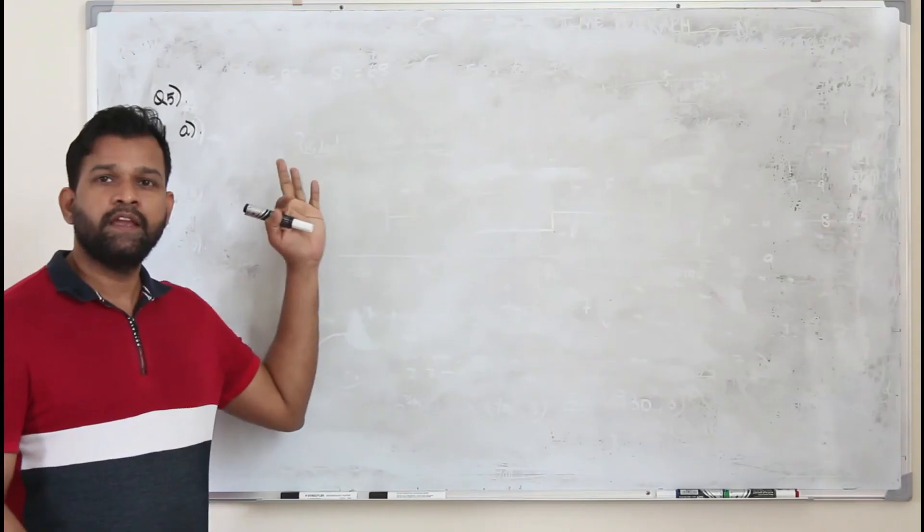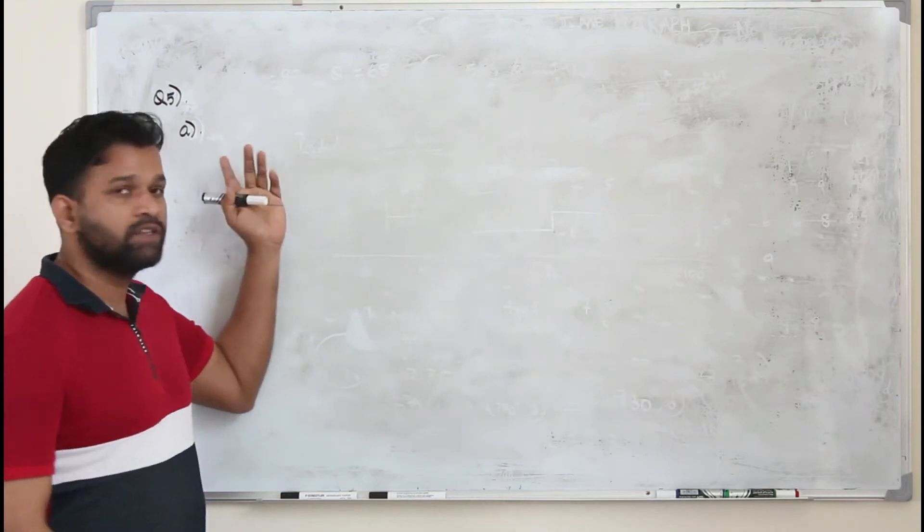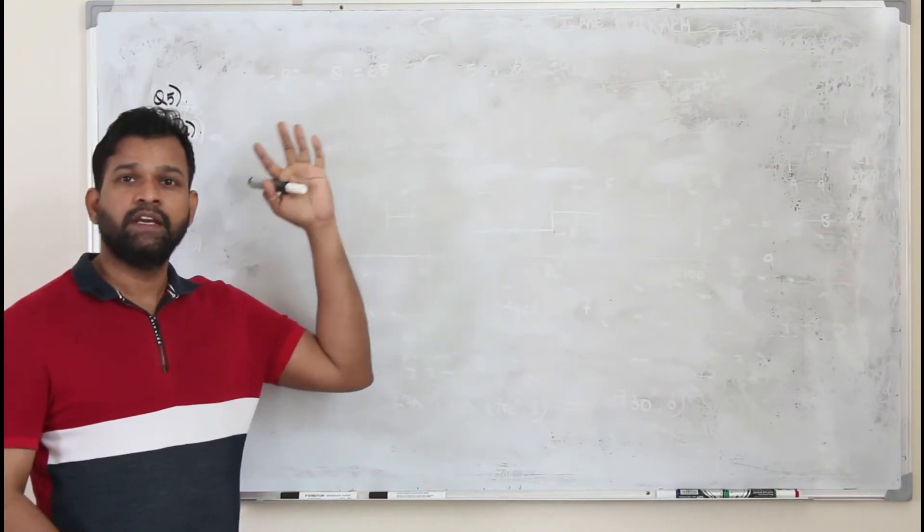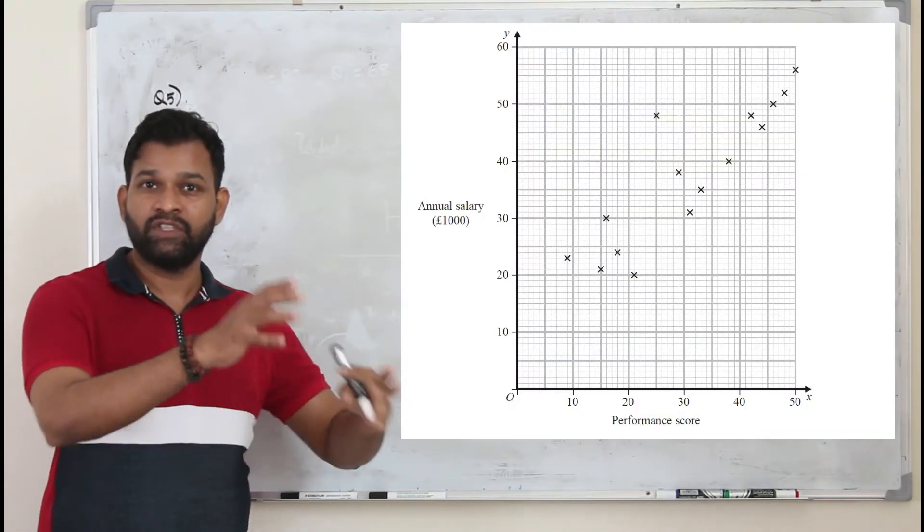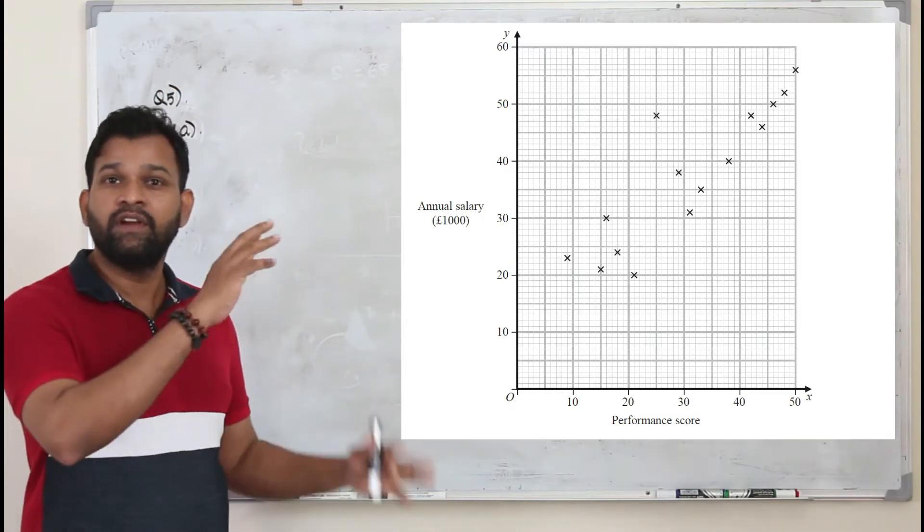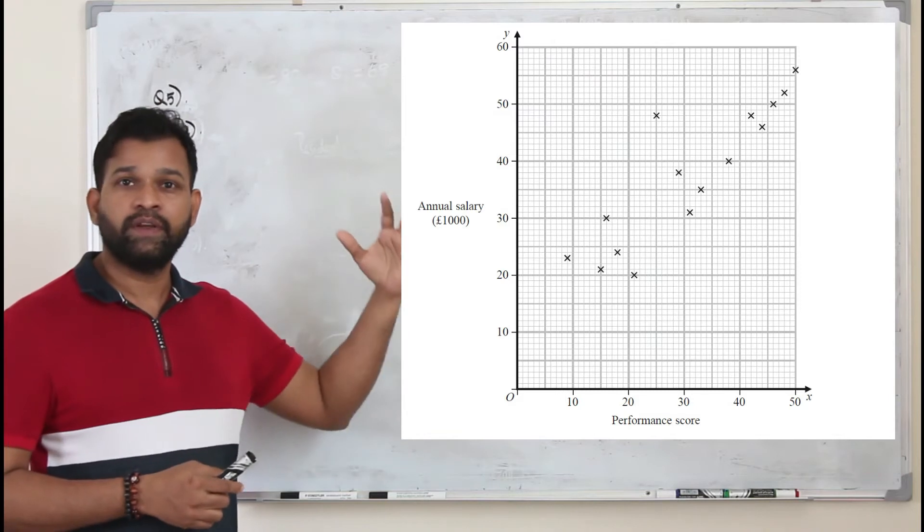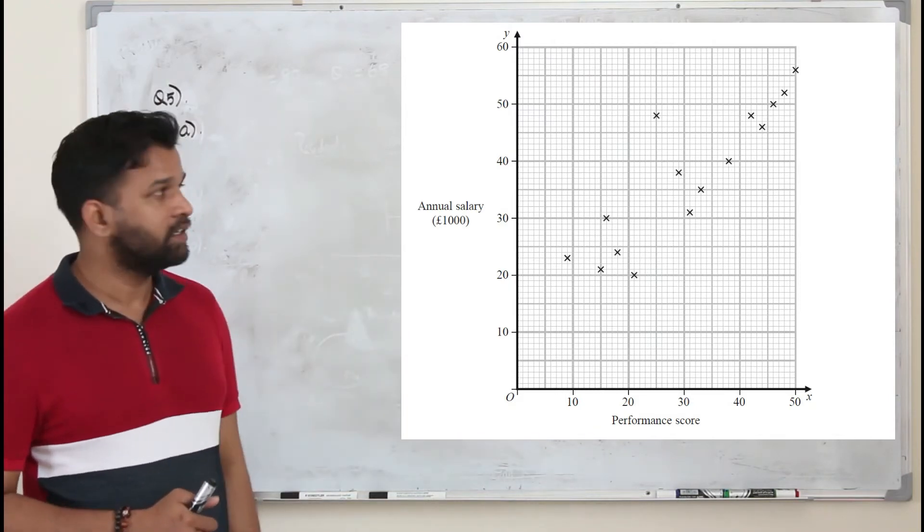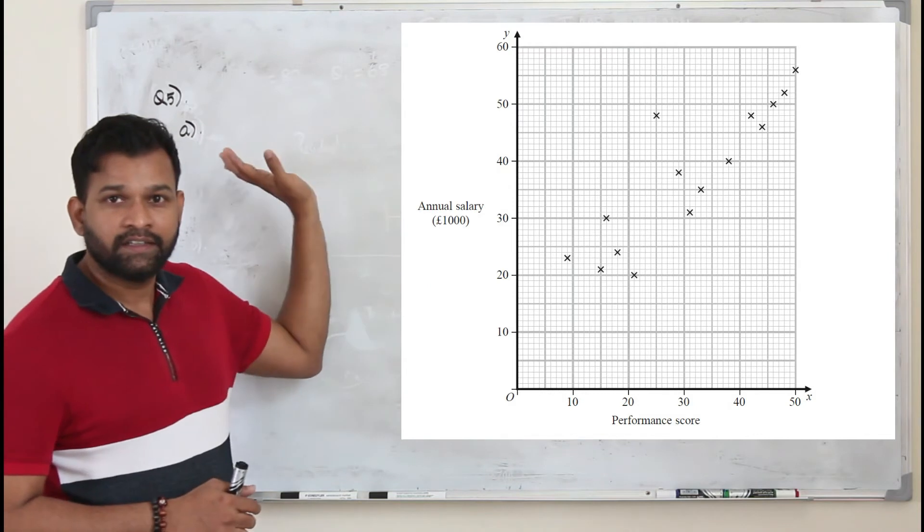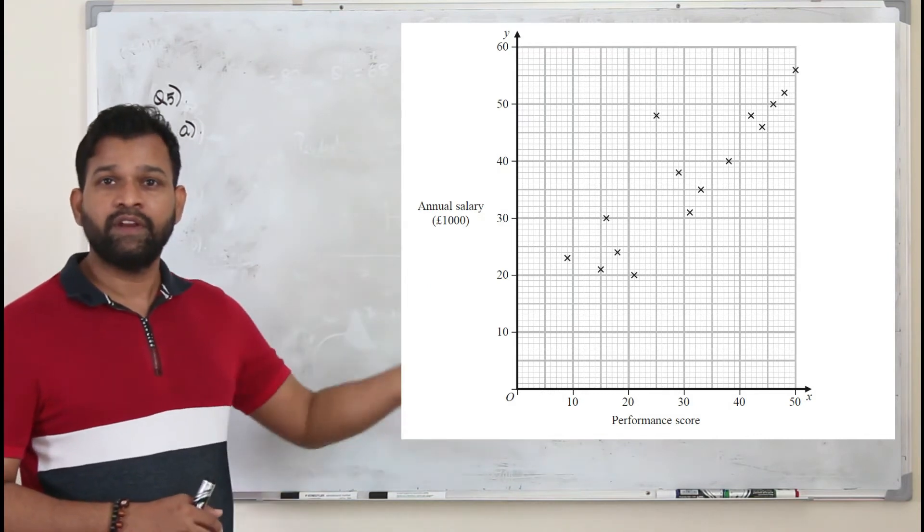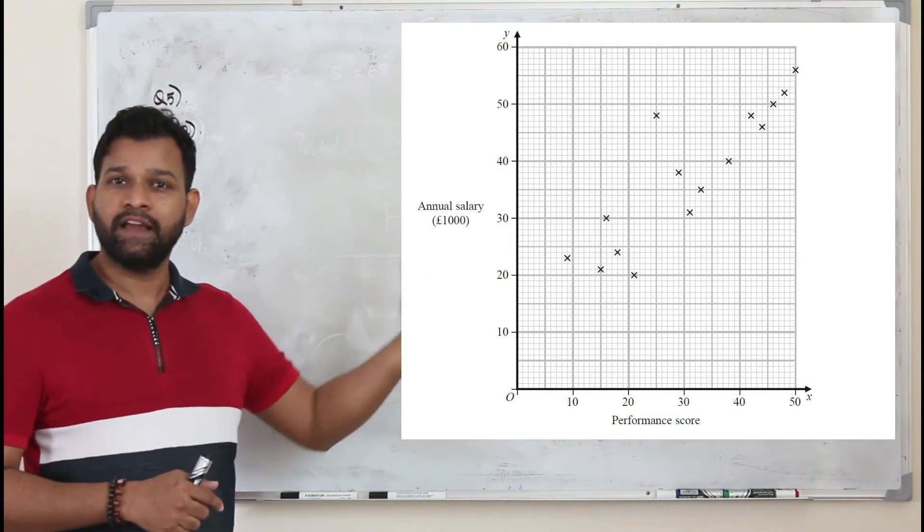This question carries one mark. To answer part A, you need to look at the scatter diagram which is given on the next page. If you look at the scatter diagram, clearly there is a positive correlation between the performance score and the annual salary. You can just write it's a positive correlation between the performance score and the annual salary.